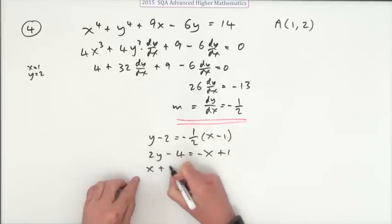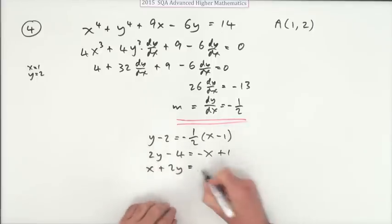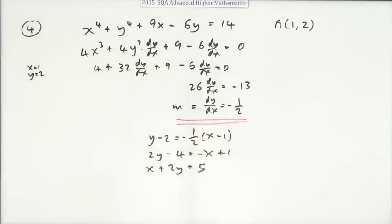I'll bring the x over: x plus 2y. I think I'll take that over there to make it in this form. There we go.